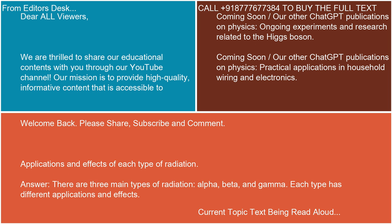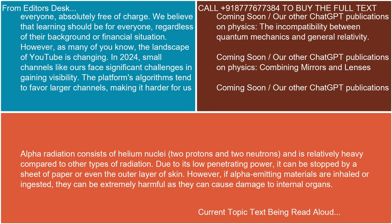There are three main types of radiation: alpha, beta, and gamma. Each type has different applications and effects. Alpha radiation consists of helium nuclei — two protons and two neutrons — and is relatively heavy compared to other types of radiation. Due to its low penetrating power, it can be stopped by a sheet of paper or even the outer layer of skin.